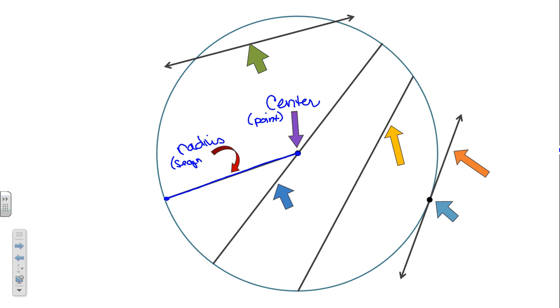Write below it, segment in parentheses, so you remember that it's a segment, not a line. Our second definition that they gave us was a chord. And a chord is a segment whose endpoints are on the circle. It's a segment, not a line. It's a segment whose endpoints are on the circle. The yellow arrow is pointing to a chord. And, again, this is a segment. Remind yourself of that by writing segment in parentheses beneath it.